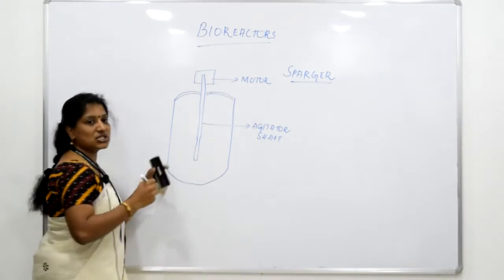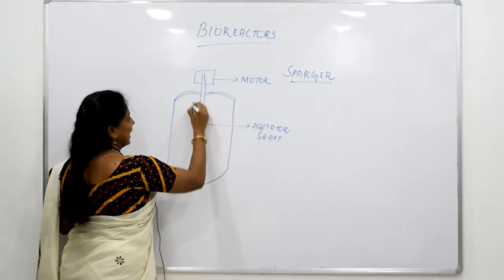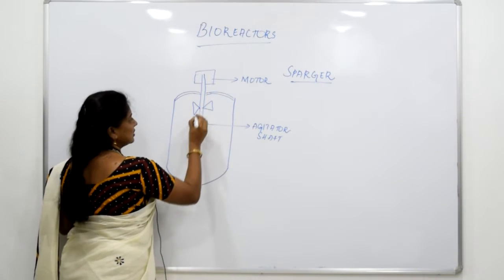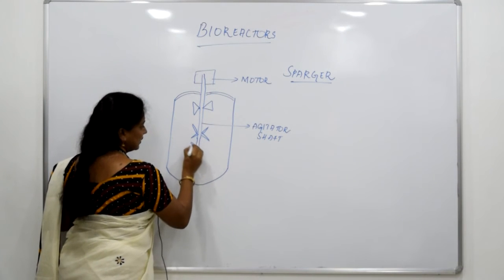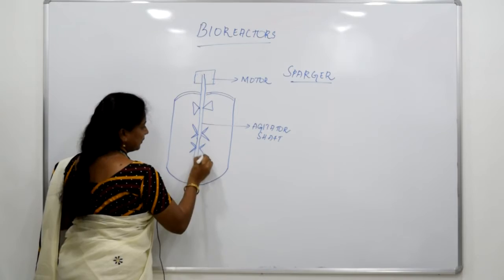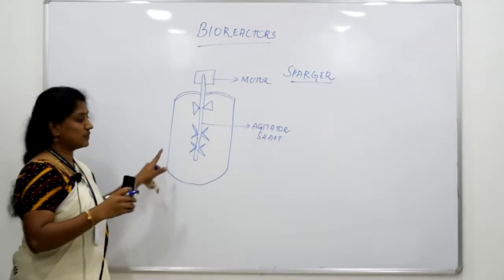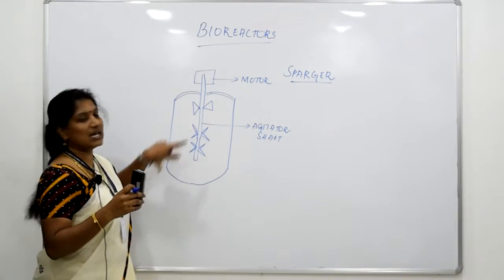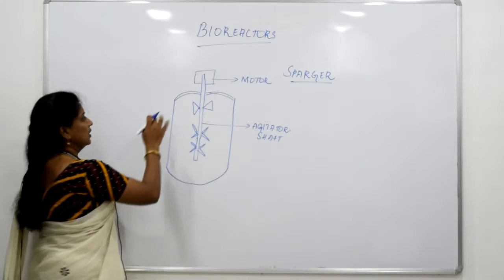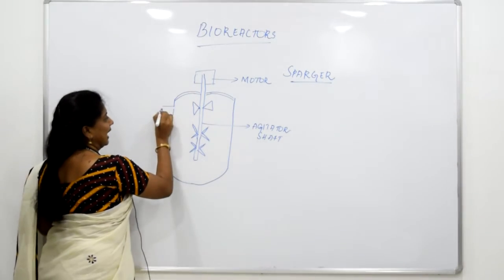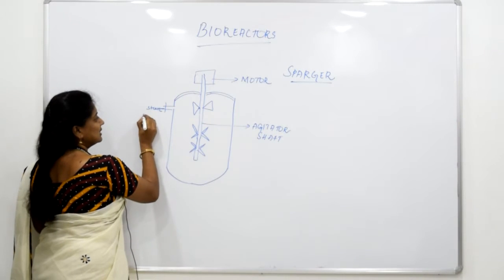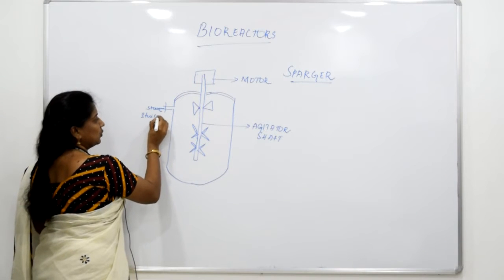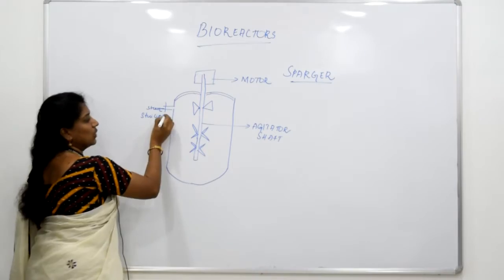Now in this agitator shaft, you can see a breaker which is here on top and there are impellers attached to the agitator shaft. The difference between this and this is what I am going to explain to you. In this you will be having an inlet for the steam. This is basically for sterilization purpose. If you need to sterilize the bioreactor, you will have to use steam.